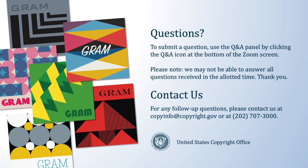Question: Could fewer than all the works on a single album be registered under GRAM while the rest are registered individually? Yes, absolutely. GRAM is a special group registration accommodation with requirements that need to be met, and it is anticipated that some songs from an album may meet the GRAM requirements while others do not. For example, if you wrote five songs yourself on an album and are the claimant for those songs, you could register those five songs on one GRAM application. The remaining songs with different combinations of authors and claimants could each be registered individually on a standard application. Using GRAM for some works from an album does not preclude you from using the standard application to register other works from the album individually.